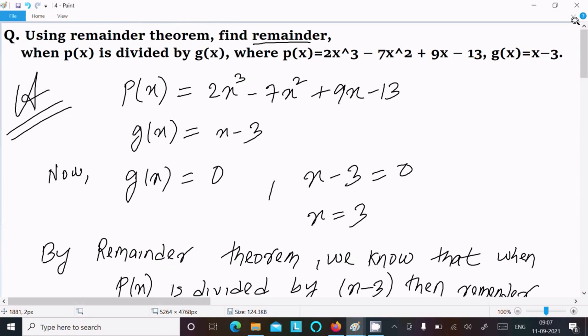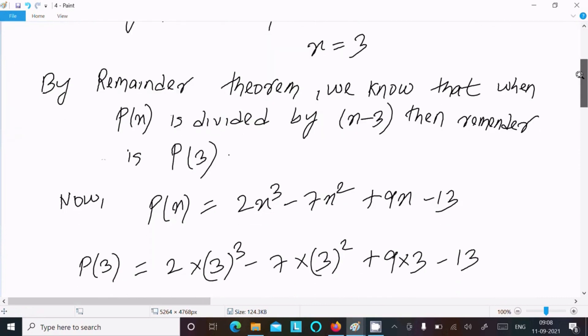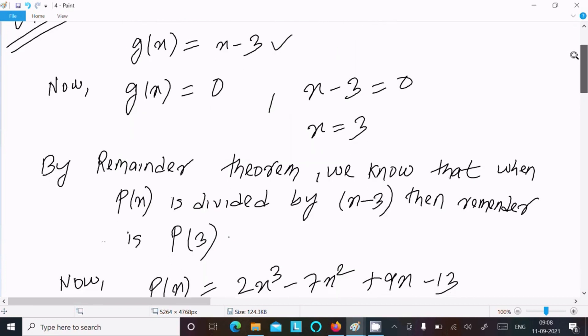If you get a question like this, using the remainder theorem find the remainder when p(x) is divided by g(x): write p(x), write g(x), set g(x) equals 0 to get x equals 3. We know that by the remainder theorem, when p(x) is divided by x minus 3, that is g(x), then the remainder is p(3).